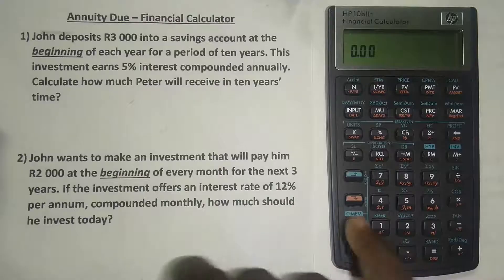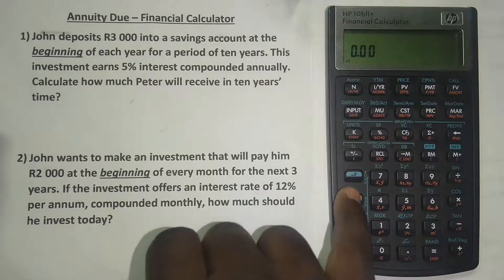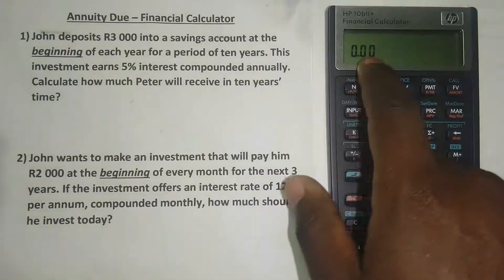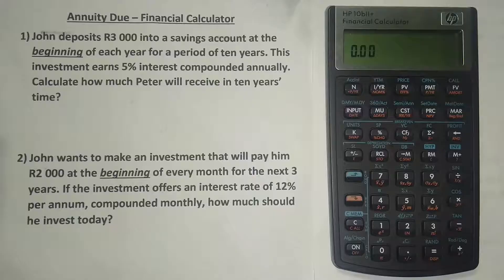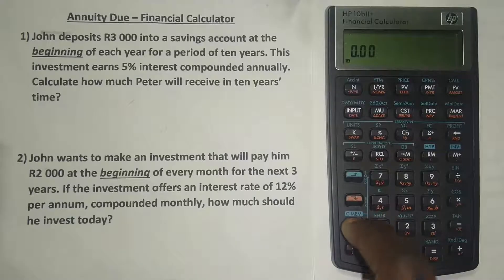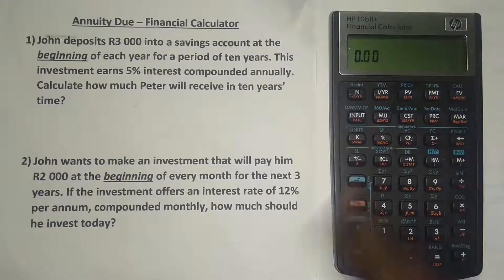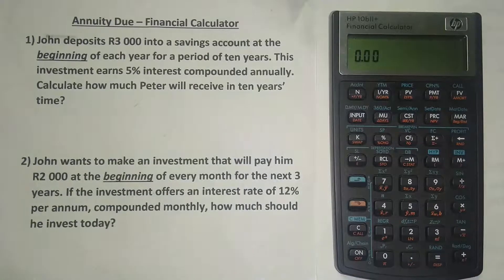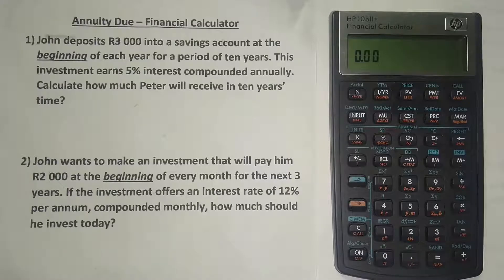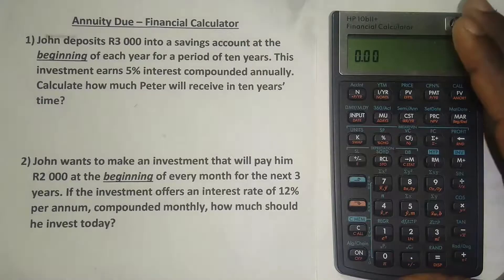If you press the orange button and then press C, you can see it's now showing one payment per year. Before we made that change, pressing orange then C would show 12 payments per year. So now we've changed it to one payment per year because it's compounded annually. We also need to change the calculator to show annuity due — payments at the beginning of the year — because by default it's an ordinary annuity at the end of the year.